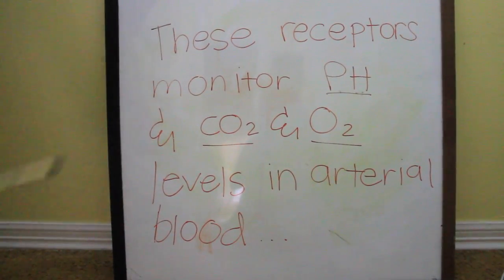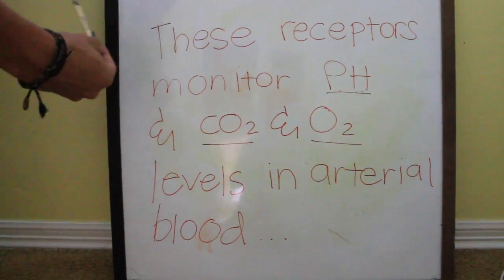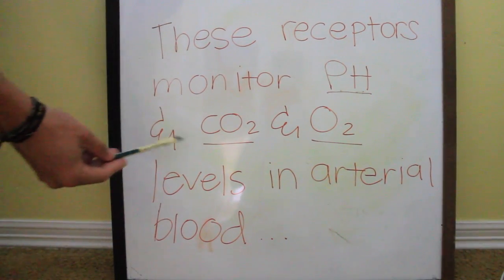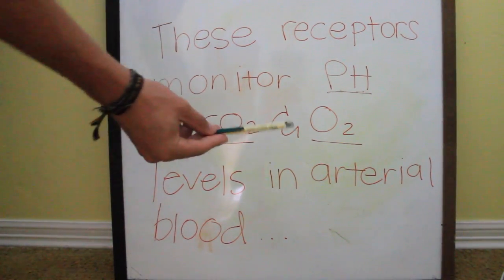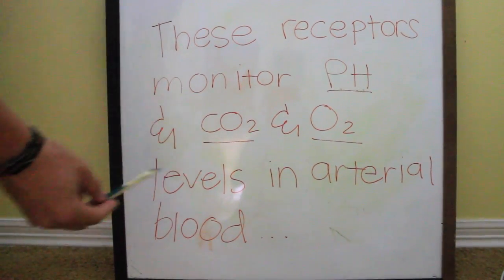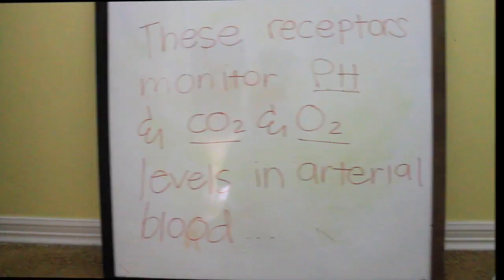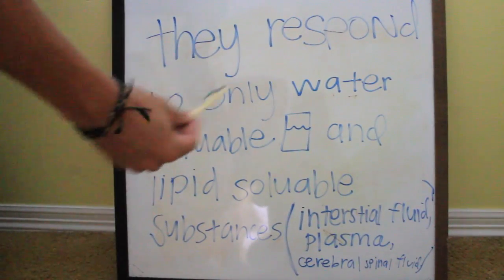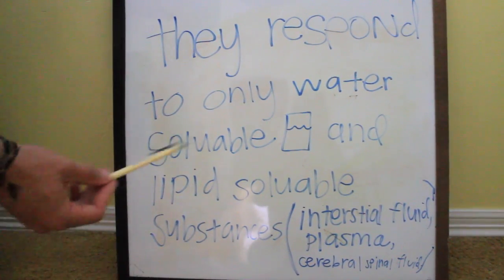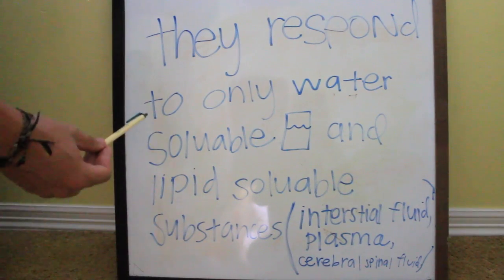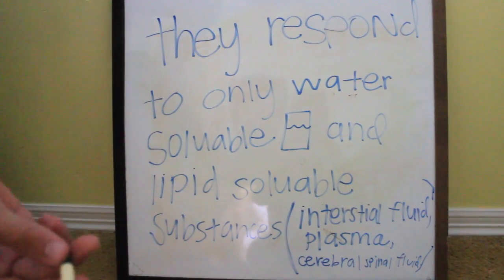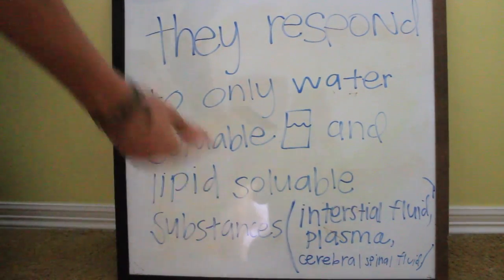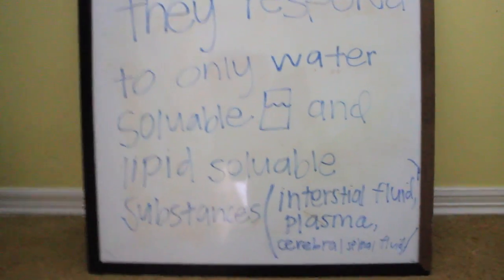Chemoreceptors are receptors that monitor pH, CO2, and O2 levels in the arterial blood. Chemoreceptors respond to only water soluble and lipid soluble substances — in other words, interstitial fluid, plasma, or cerebral spinal fluid.